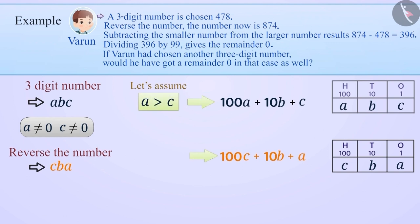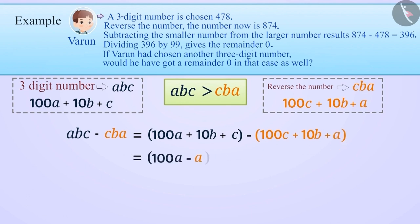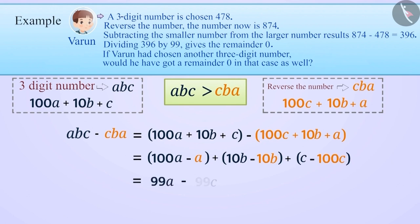Since A is greater than C, ABC is greater than CBA. So we will subtract CBA from ABC. ABC minus CBA equals (100A plus 10B plus C) minus (100C plus 10B plus A), which equals 100A minus A plus 10B minus 10B plus C minus 100C, which equals 99A minus 99C, which equals 99 times (A minus C).